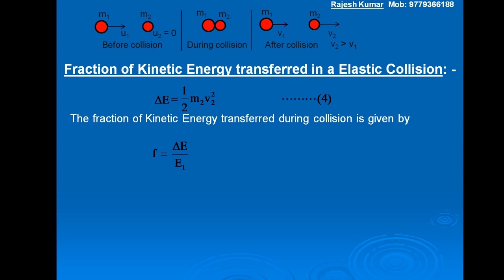Now, putting in their values: F = (½ M2 V2²) / (½ M1 U1²), from equations 4 and 3 respectively. The halves cancel each other, so this becomes F = M2 V2² / (M1 U1²), or equivalently F = (M2 / M1) × (V2² / U1²). Let this be equation 5.